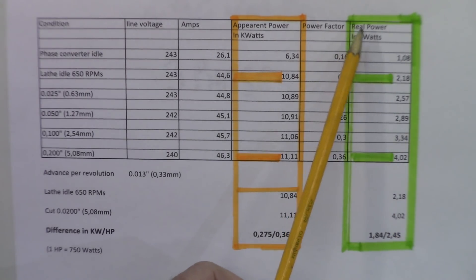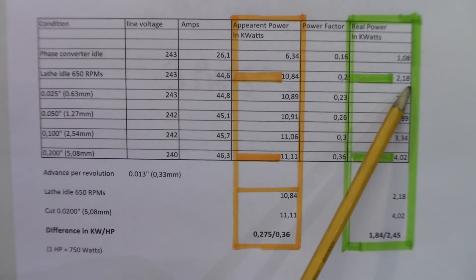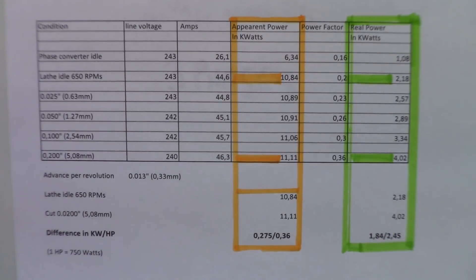We'll be going to the real power figure here. When the lathe is idling, we got 2.18 kilowatts, and when the lathe is undergoing more stress in performing a 200 thousandths cut, 5 millimeter cut, it will give you like 4.02 kilowatts. If you make the differences here, it's going to give you 1.84 kilowatts. Or, if you transform this into horsepower, 2.45 horsepower, which is a more realistic figure. That's final now.